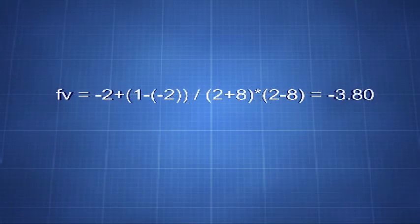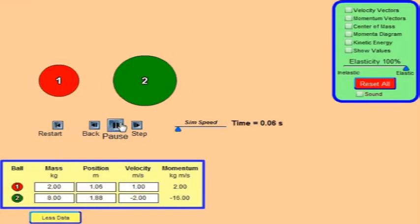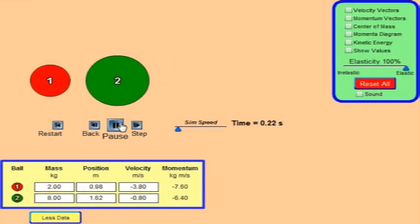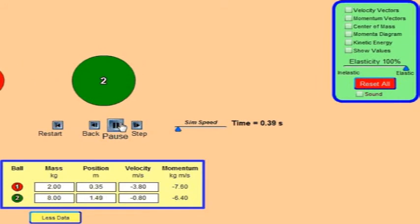Or for instance minus 2 plus 1 minus minus 2 divided by 2 plus 8 times 2 minus 8 equals minus 3.80. That is logically sound, and as we can see accurate in reality as well. This works for a 100% elastic collision.